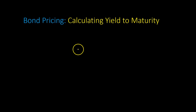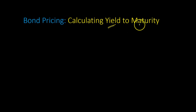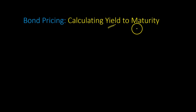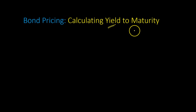Hi, everyone. In this video, I'm going to show you how you can calculate the yield to maturity of a bond. I'm going to show you this using a bond that makes annual coupon payments, and then how you can do the same for a bond that makes semi-annual coupon payments. And perhaps most importantly, I'm going to show you how you can do all of this using Excel.